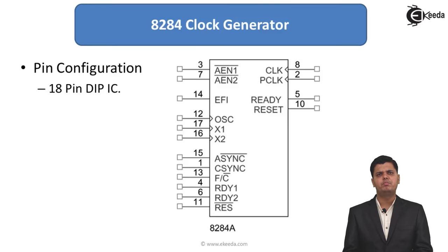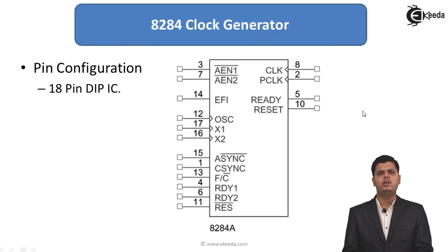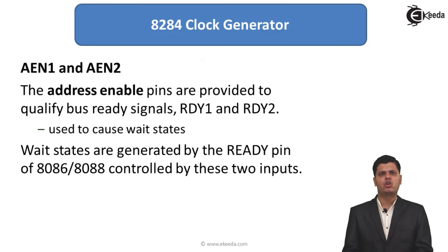This is the pin configuration of the 8284 clock generator. It is an 18-pin DIP IC, that is a dual in-line package integrated circuit. There are different pins available for interfacing with different peripherals and the 8086 or other microprocessors. We are now going to see in detail the pin configuration of the 8284 clock generator.